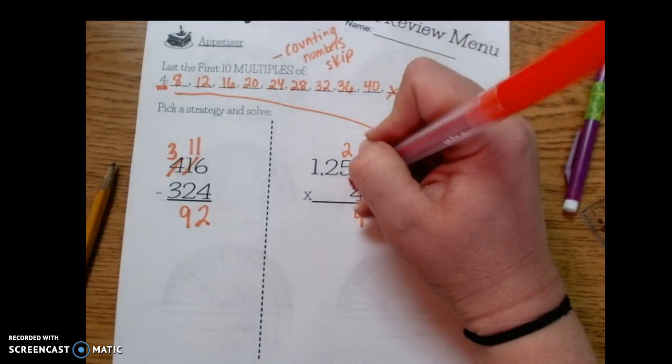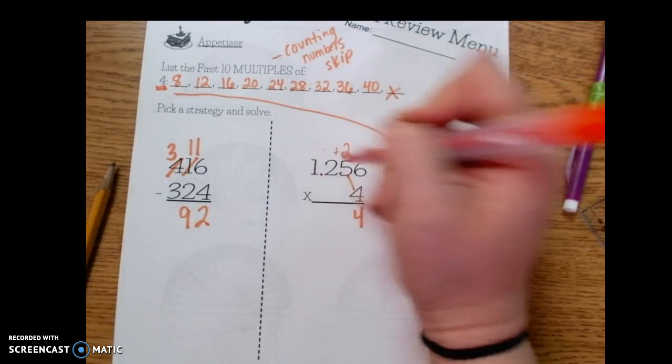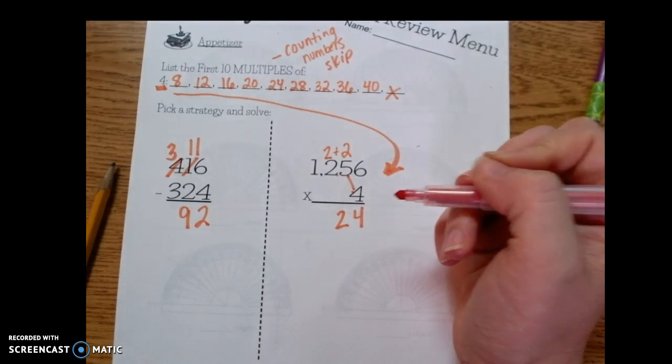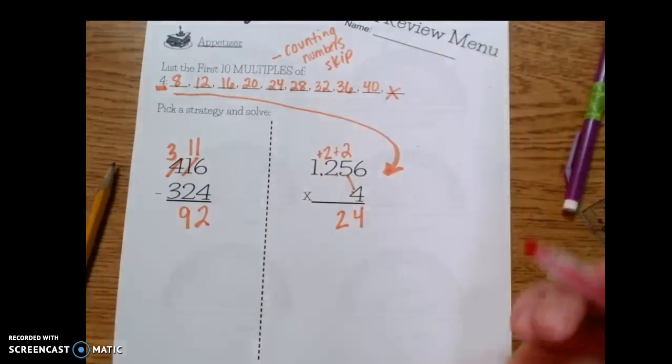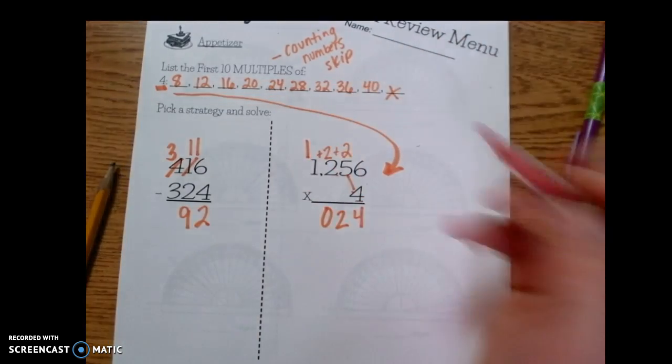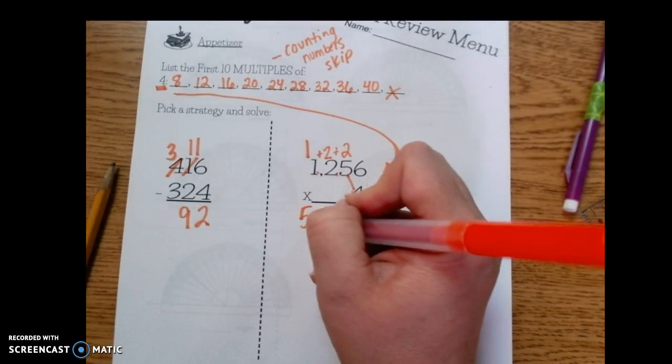Then we're going to go 5 times 4 is 20 plus the 2, so 22. 4 times 2 is 8 plus the 2 is 10. Again I have to carry that 1. And then 4 times 1 is 4 plus 1 is 5.